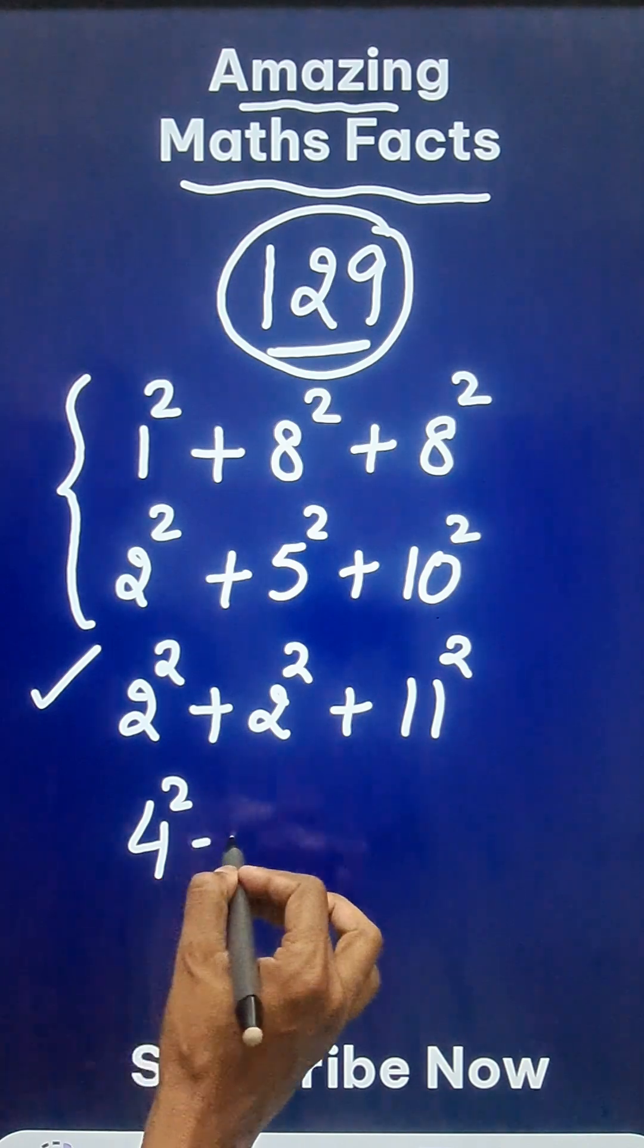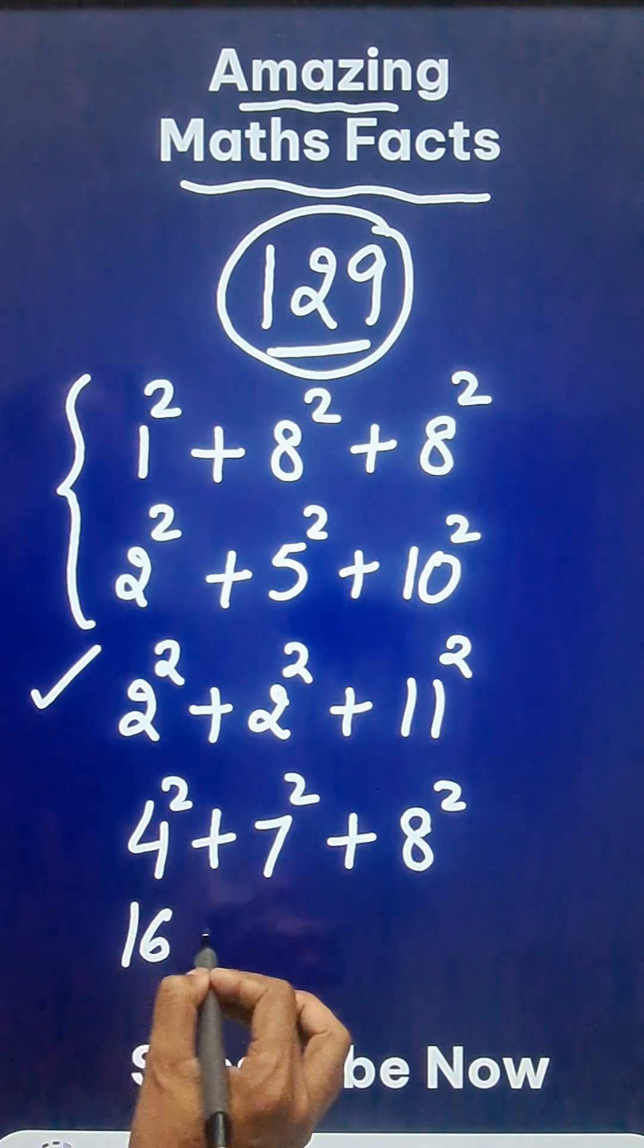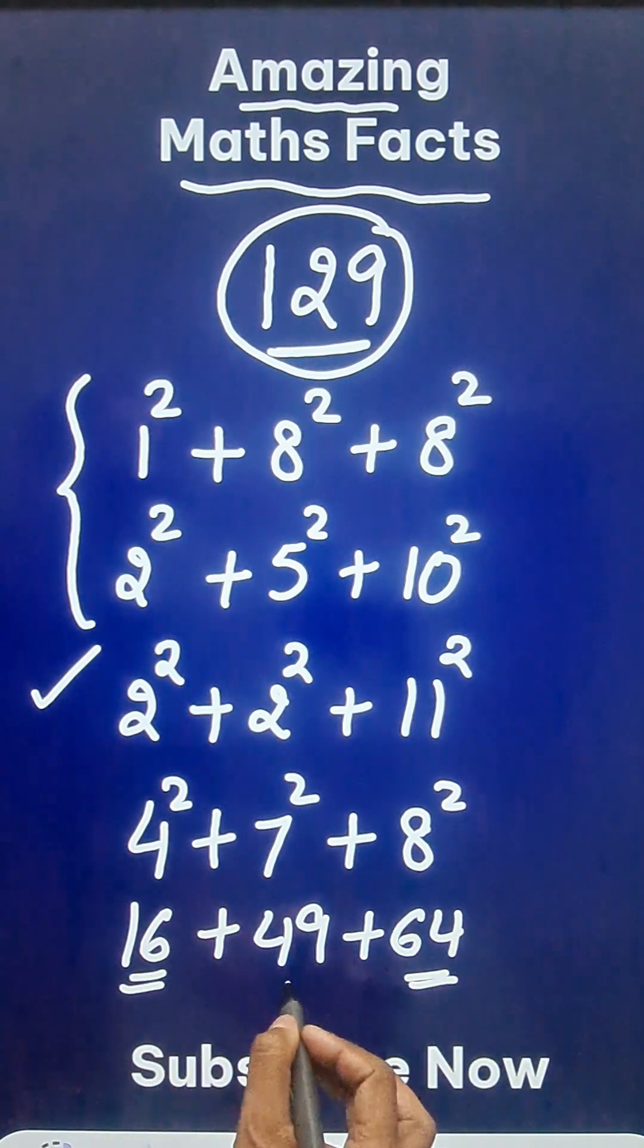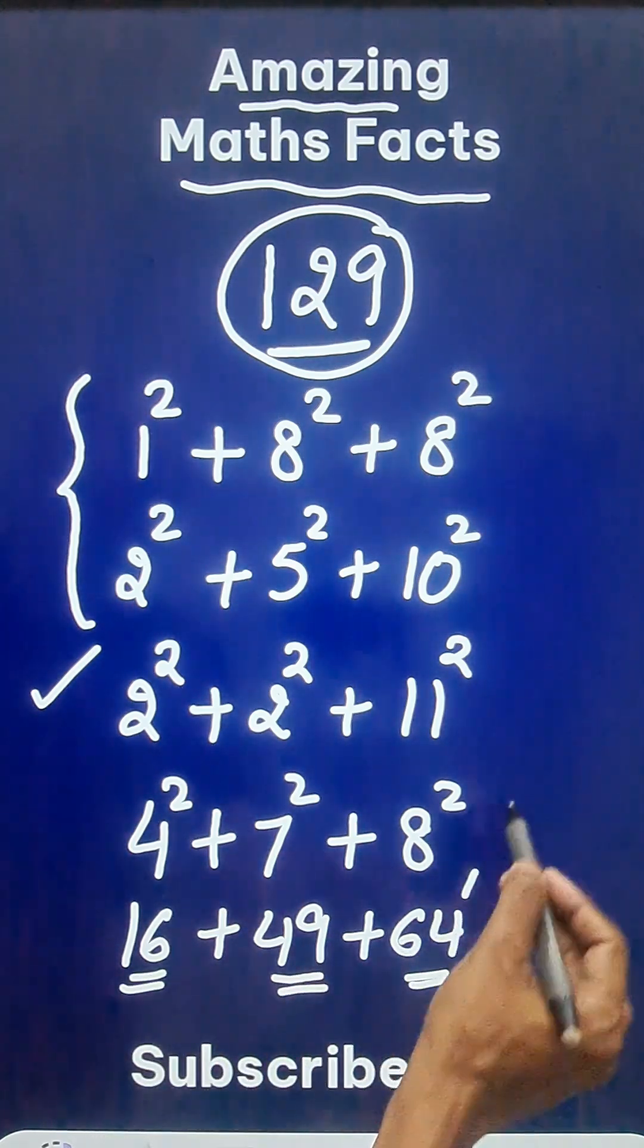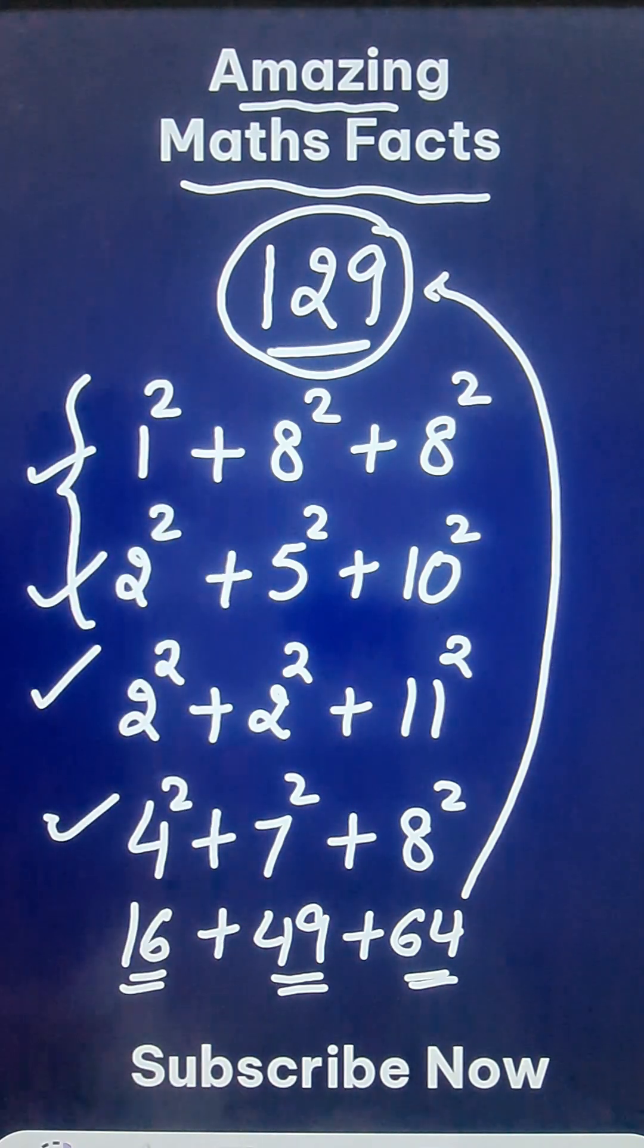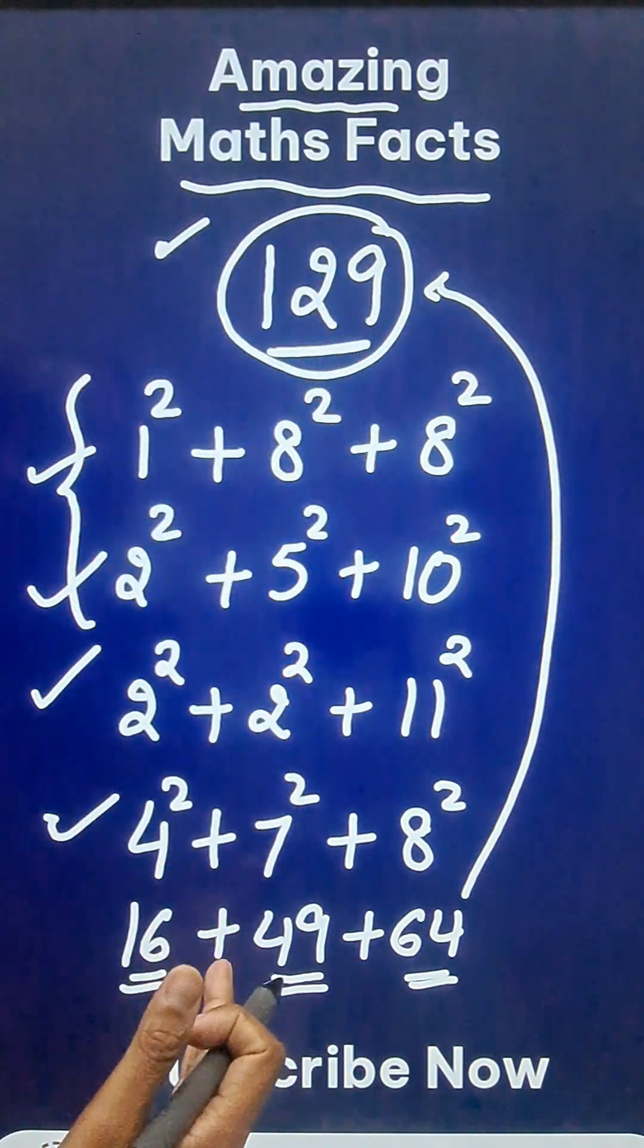4 square plus 7 square plus 8 square. How much is that? 16 plus 49 plus 64. 64 plus 16 is 80. 80 plus 49 is oh my god it's 129 again. So four different ways through which we can express 129 as sum of squares of three different numbers and that makes 129 such a special number. Do you know any such number?